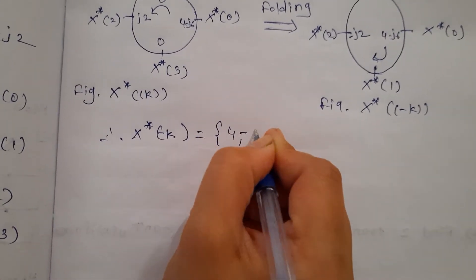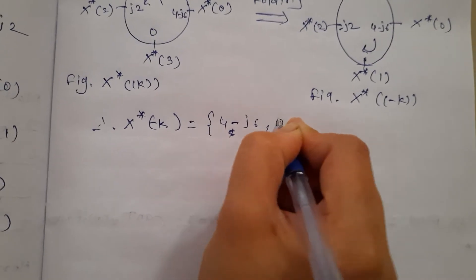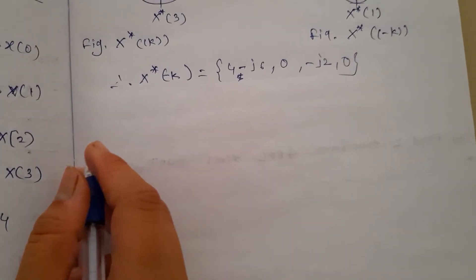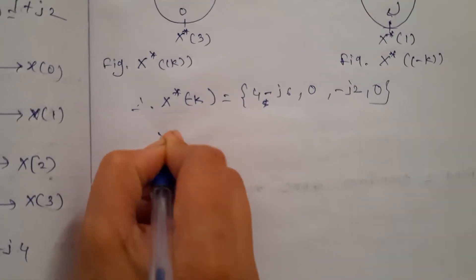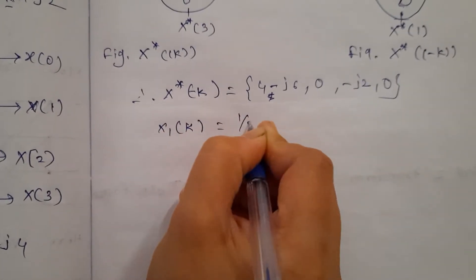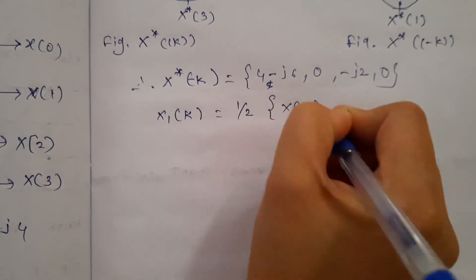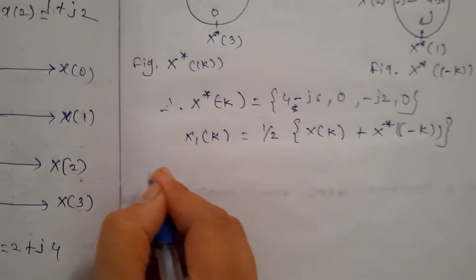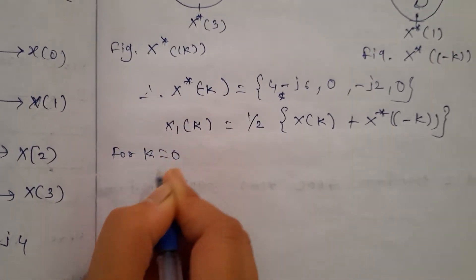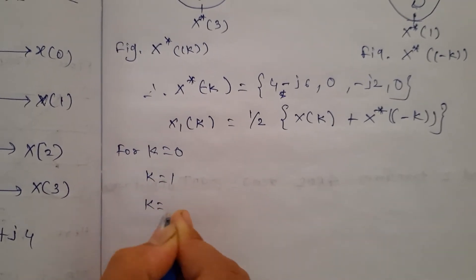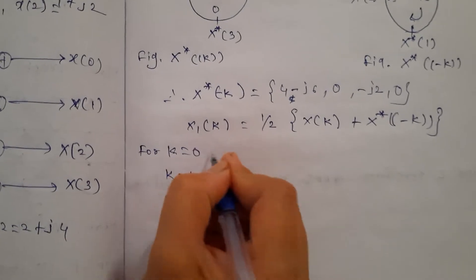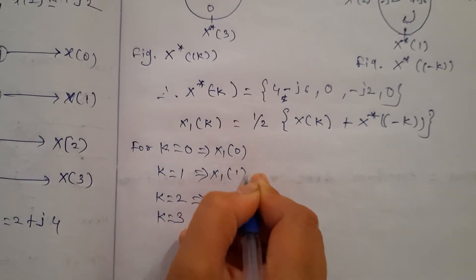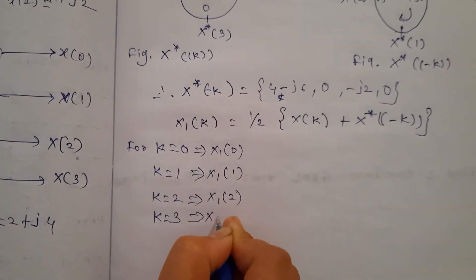Using the equation X1(k) = (1/2)[X(k) + X*(-k)], we substitute the values of X(k) = {4+j6, 0, j2, 0} and X*(-k) = {4-j6, 0, j2, 0}. We find the values for k = 0, 1, 2, 3 — that is, X1(0), X1(1), X1(2), and X1(3).